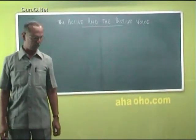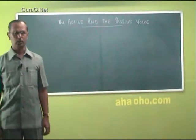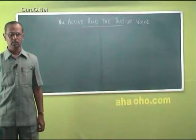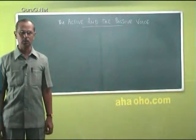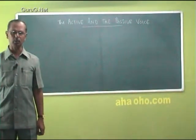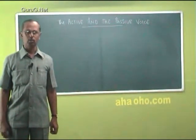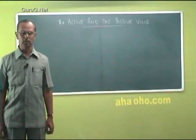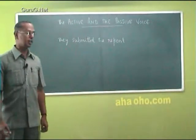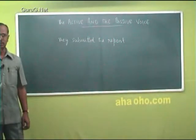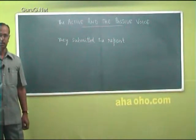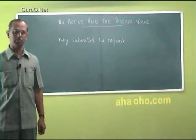In English grammar we have two different kinds of voice. The first one is called the active voice. The second one is the passive. It is the verb in a sentence that determines whether the sentence is in the active or in the passive voice. If the verb tells something about the subject, or whether the subject does something, then it means that the sentence is in the active voice. For example, 'they submitted the report.' This sentence is in the active voice because the verb denotes that something is done by the subject of the sentence.